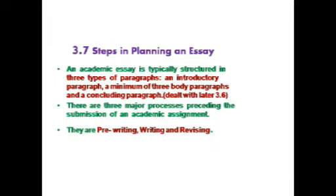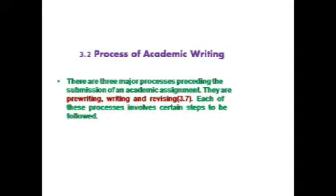Next: steps in planning an essay. An academic essay is typically structured in three types of paragraphs — an introductory paragraph, then a minimum of three body paragraphs, and a concluding paragraph. Now we are going to the three major processes preceding the submission of an academic assignment. The three major processes are pre-writing, writing, and revising. Each of these processes involves certain steps to be followed.